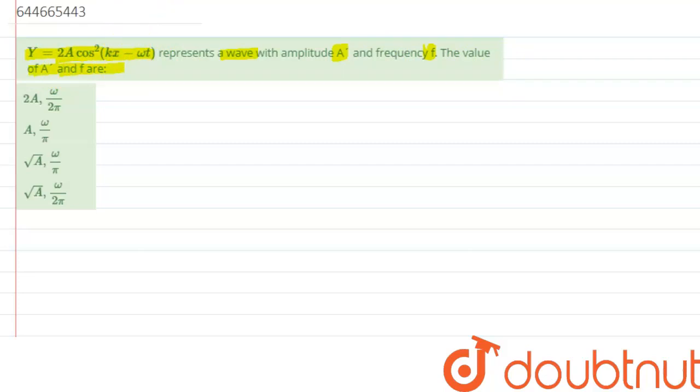So this has been the displacement equation of a particle. In short, we can say it is an equation of wave that has been given. So now let's try to resolve this value. We have been given with an equation as y equals to 2a cos square kx minus omega t.